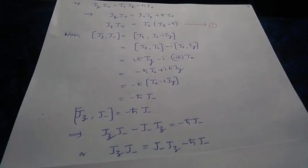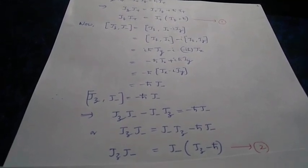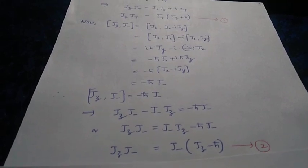Similarly, the commutator [Jz, J−] gives −h-bar*J−. Writing Jz*J− − J−*Jz = −h-bar*J− and rearranging, we get Jz*J− = J−*(Jz − h-bar) as equation (2).